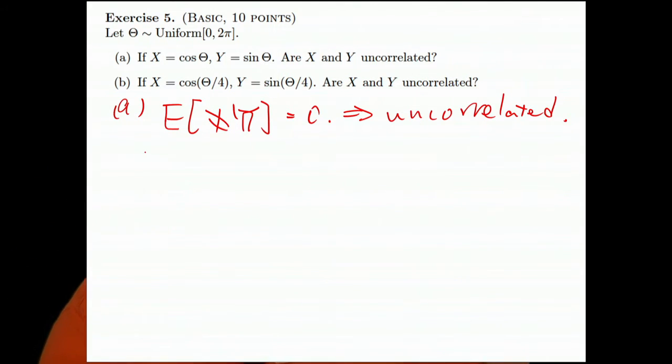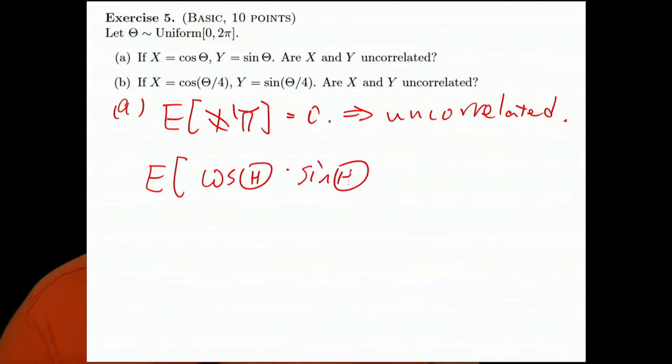So now let's find the expectation of XY. X is cosine theta, theta is a random variable, times sine theta. This is sine 2 theta divided by 2.